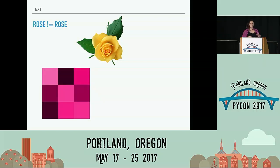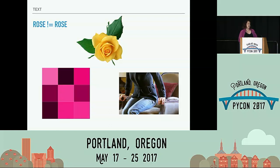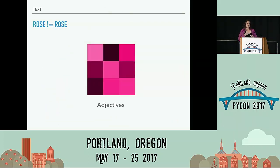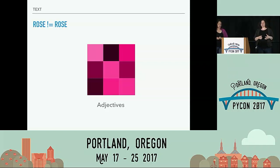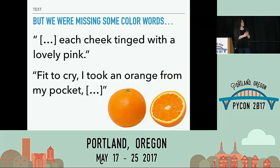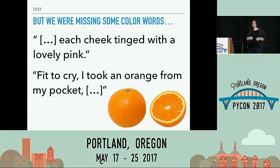When we first started I said we'll just look at adjectives and leave it at that. But as the project evolved after the first data run, we realized there was a problem. We quickly found that using only adjectives, we weren't capturing all the words that were describing color. The first example is a passage from Frankenstein where 'pink' is clearly used to describe the color of a cheek. But because the NLTK was picking this up as a noun, it wasn't being included in our list of adjectives, even though it was one of the words we wanted to study. So we decided to capture color words that were nouns but still being used descriptively.